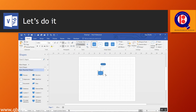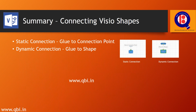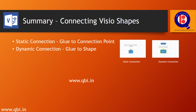Let's summarize connecting Visio shapes. In Visio there are two types of connection: a static connection, in which we connect one shape to another onto the connection point; and a dynamic connection, in which we glue one shape to another by hovering the connector tool tip over the shape. Thank you for your learning.